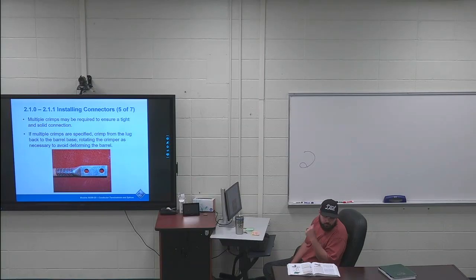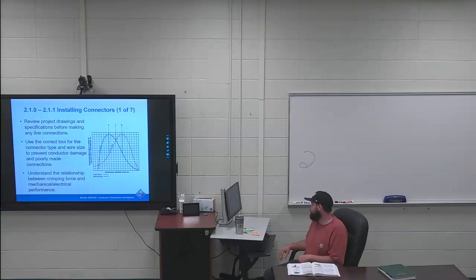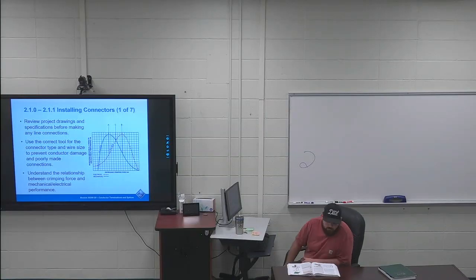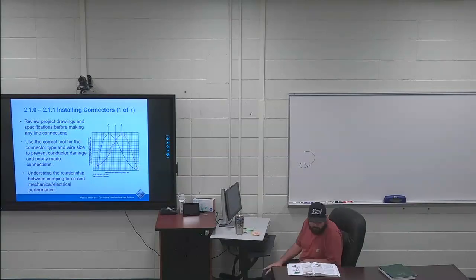Page 14, installing connectors, 2.1.1 installing compression connectors. This graph is going to be important. Your mechanical advantage or your best mechanical spot versus your electrical spot are at different places. So you're going to want to find a middle point, which is point C on the graph. Second paragraph, second sentence to the end is highlighted. Maximum mechanical strength A occurs at a lower crimping force than the maximum electrical performance B. The point of intersection C represents the ideal crimping force. Using a crimping die that's too large results in poor electrical performance and using a die that's too small produces a weak mechanical connection.